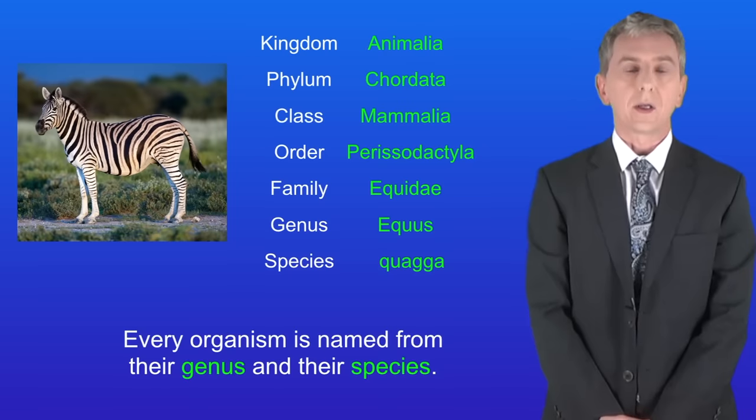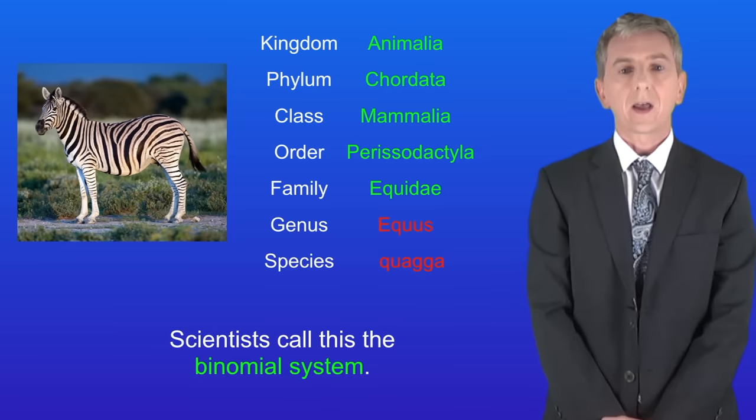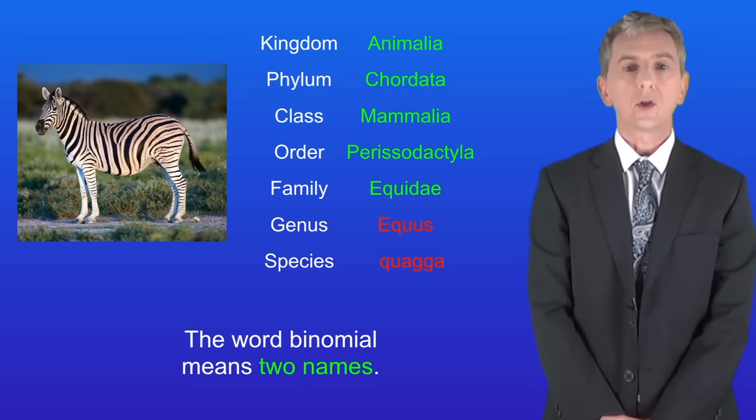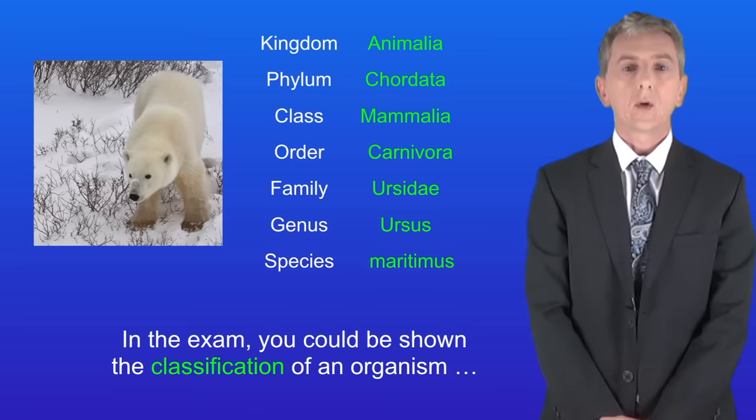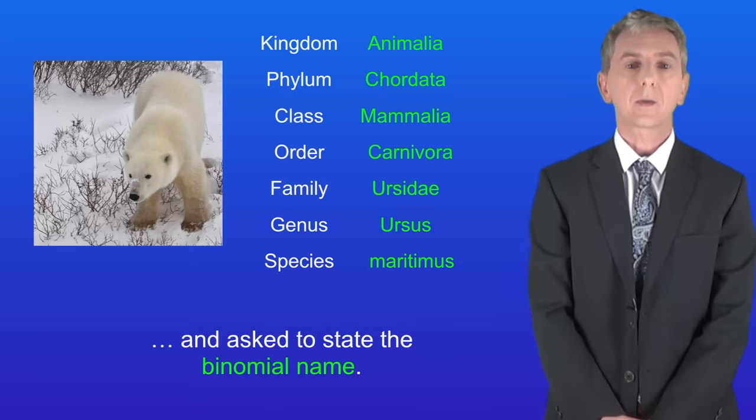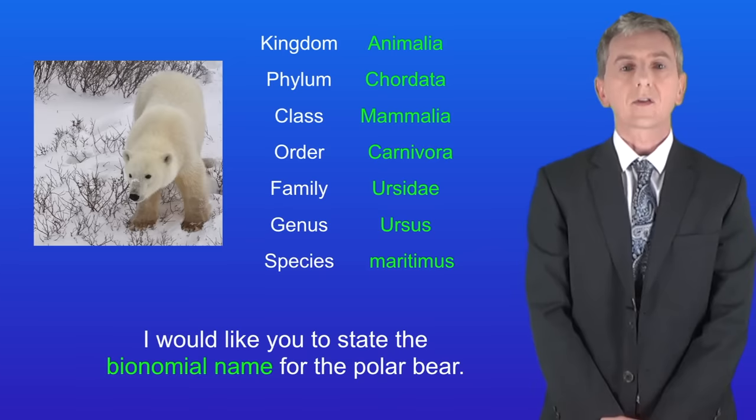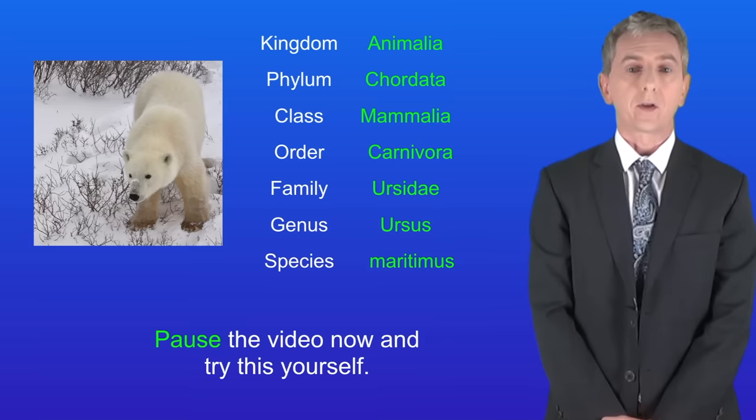Now every organism is named from their genus and their species. So for example this zebra has the name Equus quagga. Scientists call this the binomial system and the word binomial means two names. So again in the exam you could be shown the classification of an organism and asked to state the binomial name. I'm showing you here the classification for polar bears. I'd like you to state the binomial name for the polar bear. So pause the video now and try this yourself.